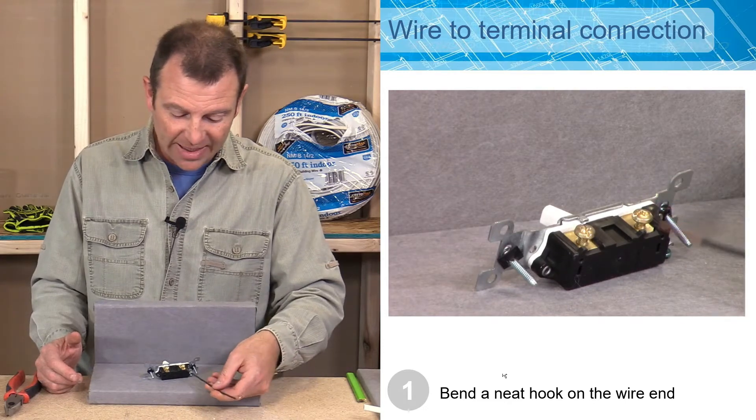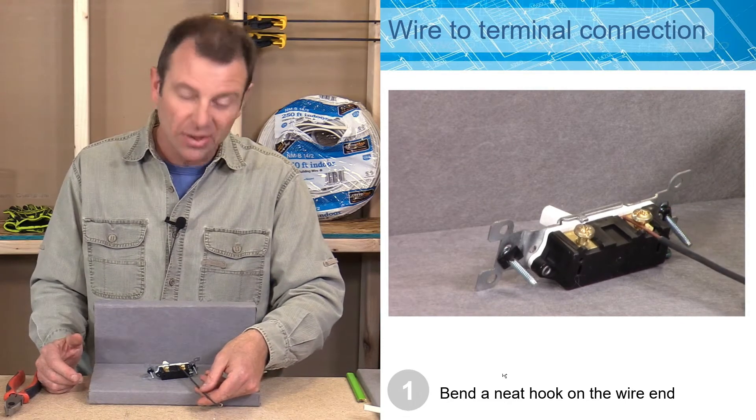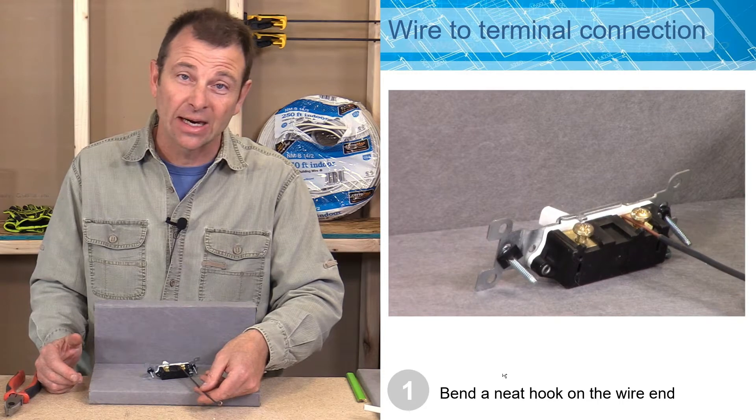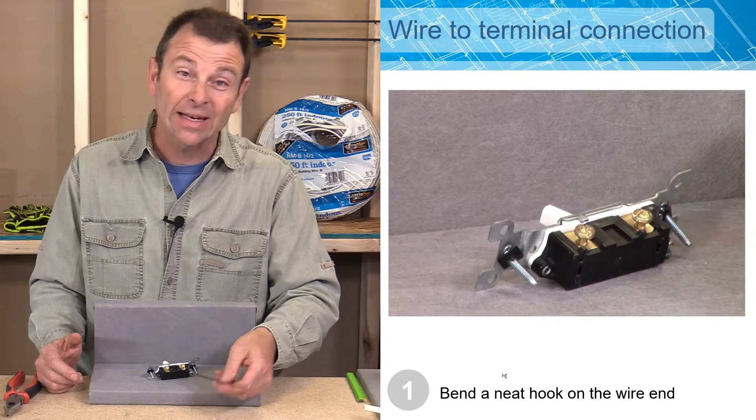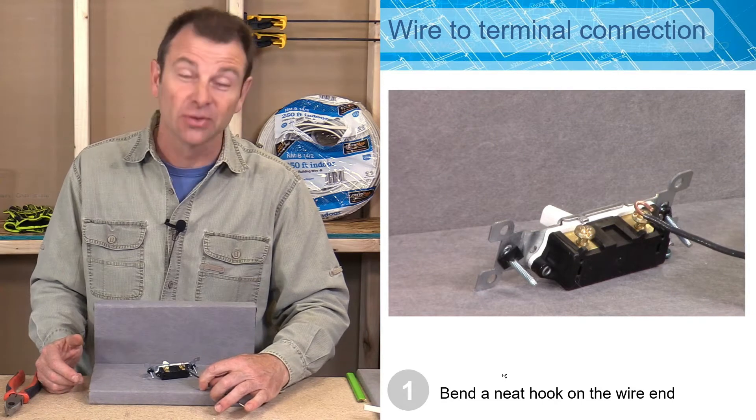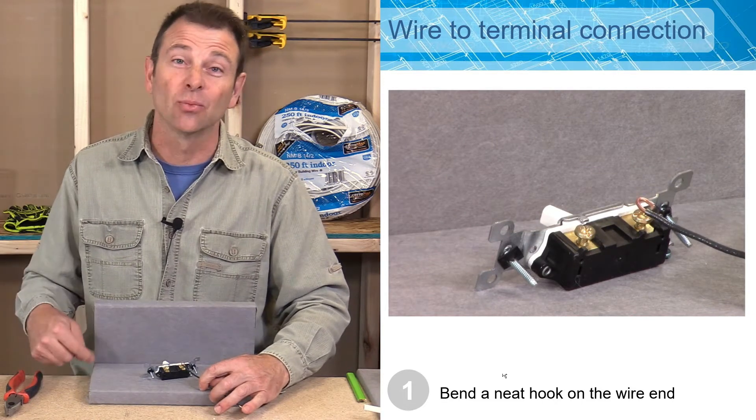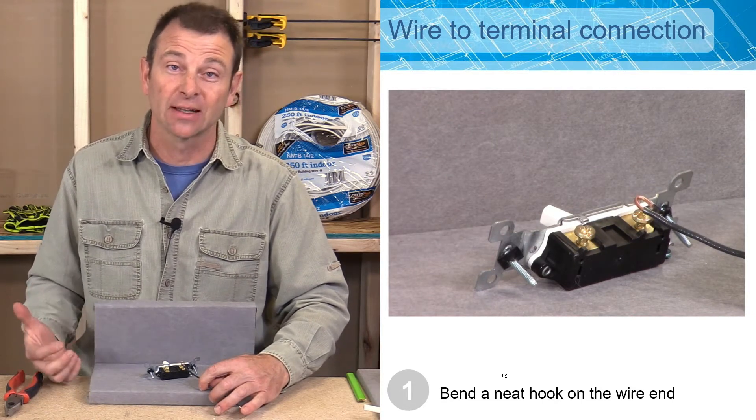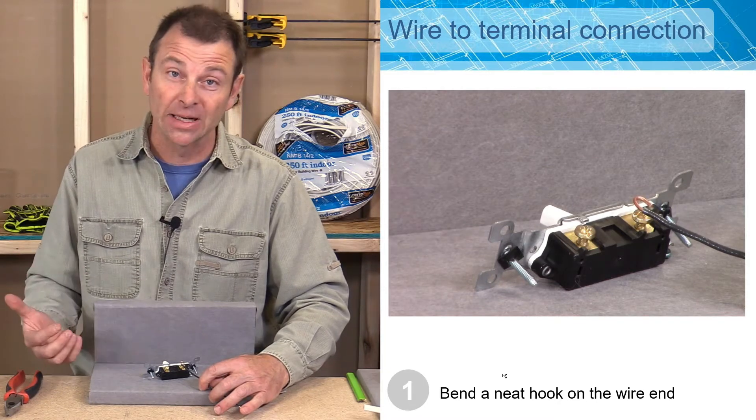If we have a straight end already, we could put it in there and try to tighten that down, but it's not going to make a good connection. We actually want to wrap that wire around that terminal so when we tighten it, it's actually going to wrap tighter. It's going to make a very solid connection, very permanent connection.